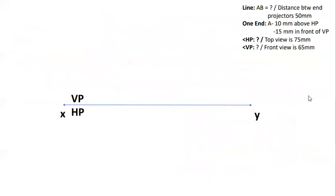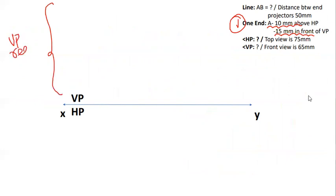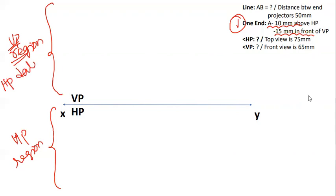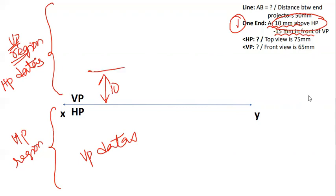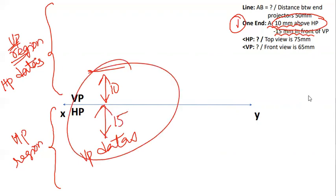First of all, what is the first data? If we get a point, the point data is first. The point A is 10mm above HP and 15mm in front of VP. What we do is that XY is the VP region — that is the vertical plane. If 10mm above HP, we go up 10mm from XY. If 15mm in front of VP, we drop it in the horizontal plane. This is how we can draw using the shortcut.